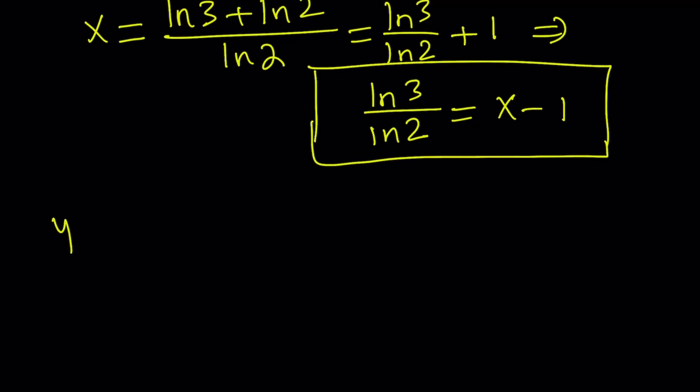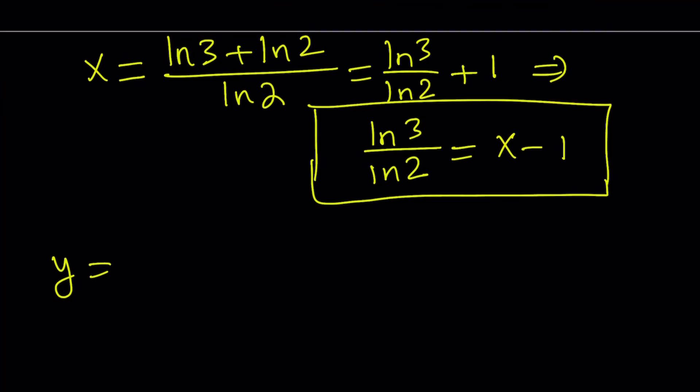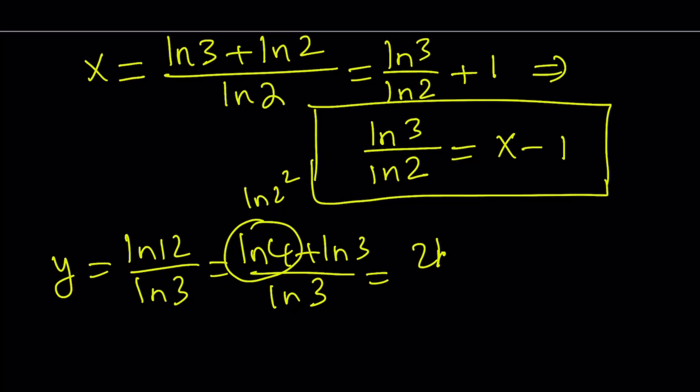So now we know that y is equal to ln(12)/ln(3). And 12 can be written as 4×3. Therefore, this is equivalent to ln(4) + ln(3) divided by ln(3). And this is 2·ln(2) because it's ln(2²). So I can write it as 2·ln(2)/ln(3) + ln(3)/ln(3) is equal to 1.